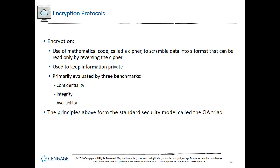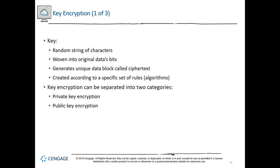Encryption can happen in various layers of the OSI model. The most popular kind of encryption encodes the original data's bits using a key, or a random string of characters, sometimes several times in different sequences, to scramble the data and generate a unique and consistently sized data block called ciphertext. The key is created according to a specific set of rules or algorithms. Key encryption can be separated into two categories: private key and public key.